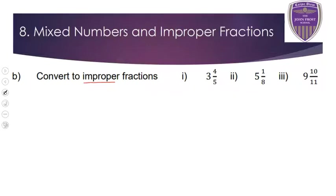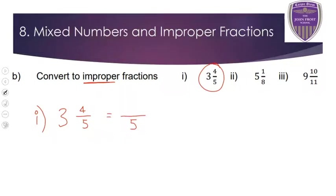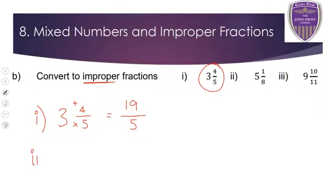Now converting mixed numbers to improper fractions — the denominator stays the same, so we're working out the numerator. For 3 and 4 fifths, we're talking about fifths, so the big 3 means we've got 3 whole sets of 5 already. Do 3 times 5, because we've got 3 whole sets of 5, plus an extra 4. So 3 times 5 is 15, plus 4 is 19. The rule is always: times the big number by the denominator and then add on the numerator. Answer is 19 over 5.